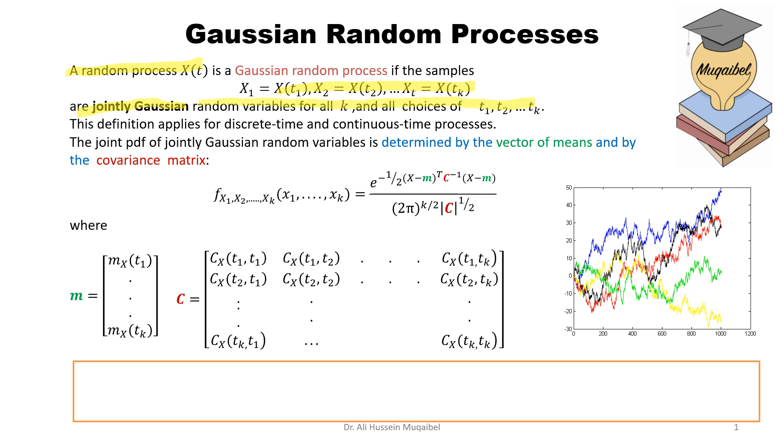This definition applies to discrete as well as continuous time processes. Discrete will have clearly explicit time, and it also applies to continuous time processes.